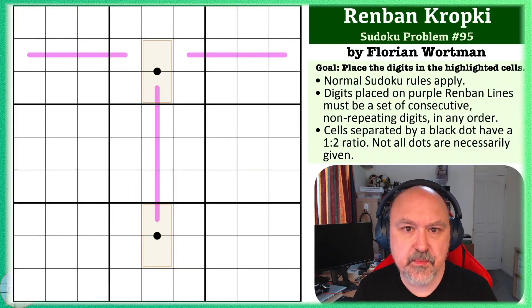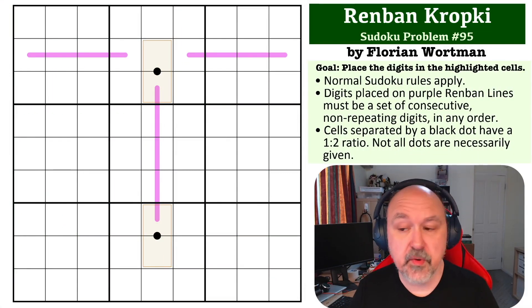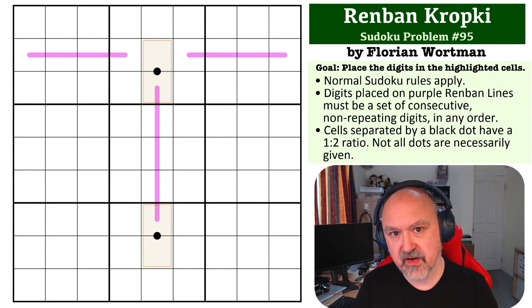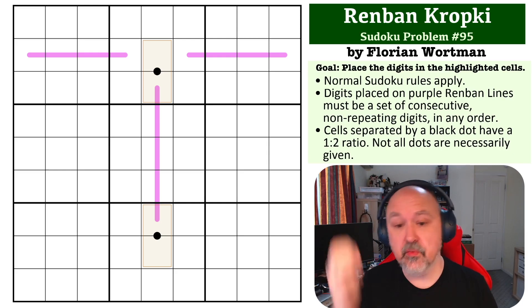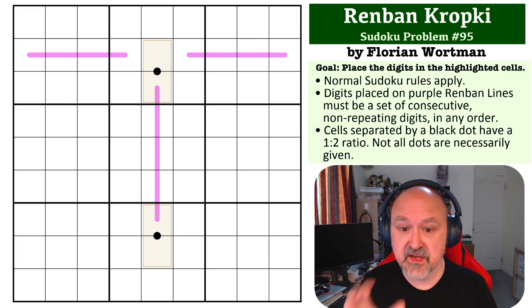Hey, this is Broomster and this is number 95 in the Sudoku problem series. This is a Renban Kropki problem by Florian Wortman. Thanks Florian for sending it through. As always, the goal is to place the digits in the cells highlighted in the brown boxes.